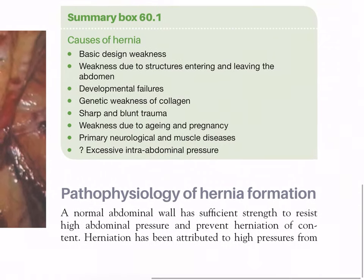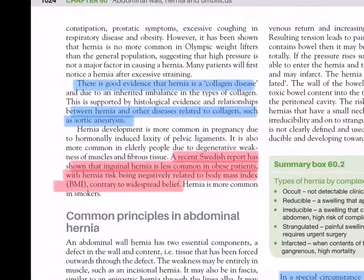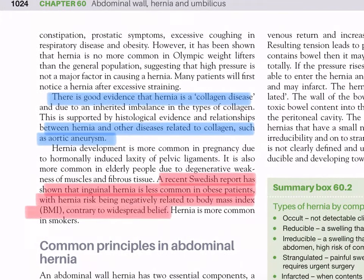A normal abdominal wall has sufficient strength to resist high abdominal pressure and prevent herniation. Herniation has been attributed to high pressures from constipation, prostatic symptoms, excessive coughing in respiratory disease, and obesity. However, it has been shown that hernia is no more common in Olympic weightlifters than the general population, suggesting that high pressure is not a major factor in causing a hernia.